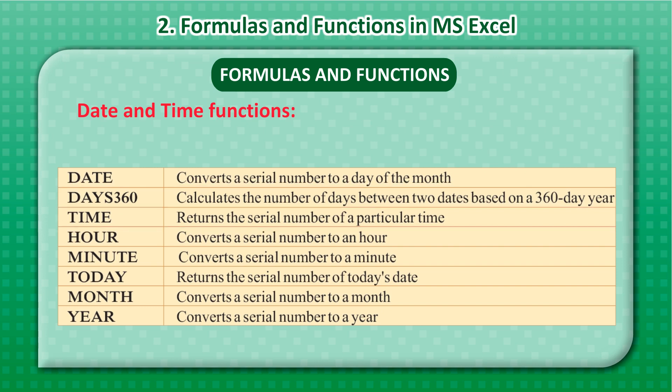Time returns the serial number of a particular time. Hour converts a serial number to an hour. Minute converts a serial number to a minute. Today returns the serial number of today's date. Month converts a serial number to a month.